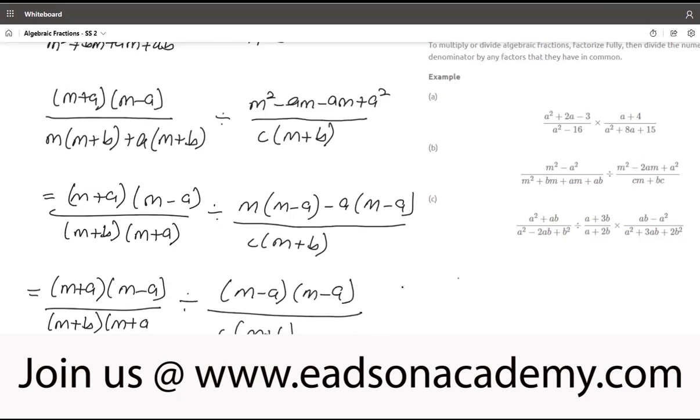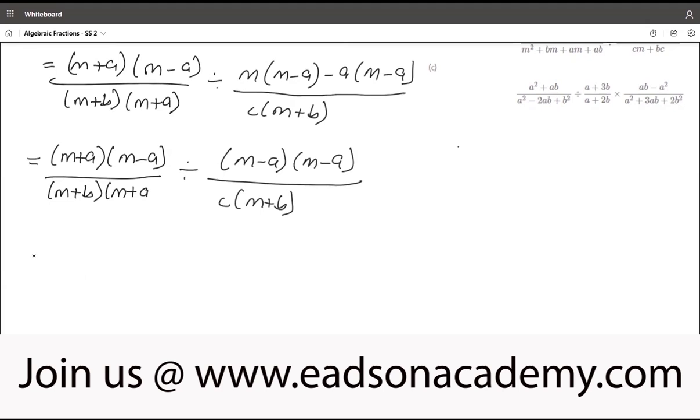And note that, whenever we divide one fraction by another fraction, the sign of division will always change to multiplication. So this becomes m plus a, m minus a, over m plus b, m plus a. Instead of divide now, that is times. And when we do that, we multiply by the reciprocal of this fraction. So this now becomes c into m plus b, all over m minus a, times m minus a.